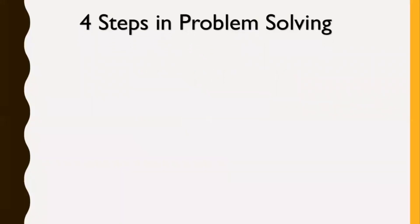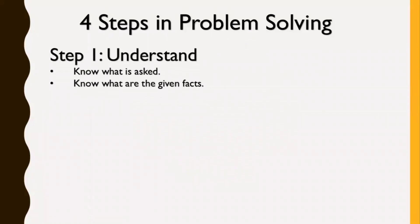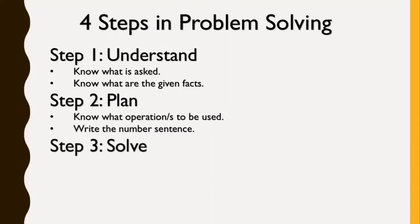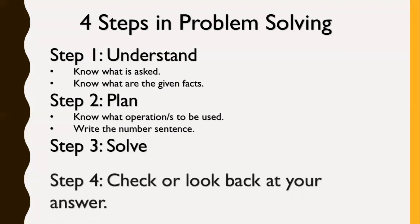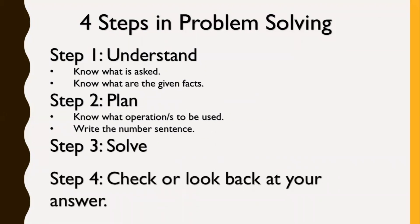Let's go back with our topic. We have four steps in problem solving. Let's recall what those are. Step 1 is to understand - know what is asked and know what are the given facts. Step 2 is plan - know what operation or operations to be used, then write the number sentence. Step 3 is to solve. Step 4 is to check on your answer or look back at your answer. So these are the four steps in problem solving.